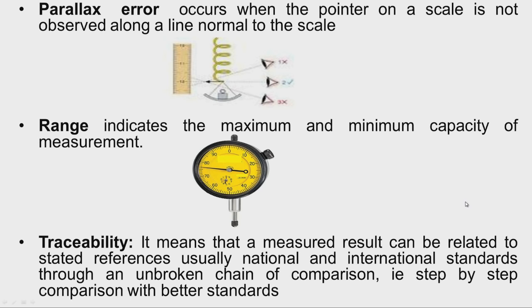Parallax error occurs when the pointer on a scale is not observed along a line normal to the scale. We can understand this with a diagram where we have a scale and pointer, and an observer observing from three different positions — position 1, position 2, and position 3.